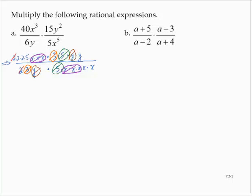Simplifying this, I would have 2 times 2 times 5 times y in the numerator, so that's 20y in the numerator. And in the denominator, I have x times x, or x squared.